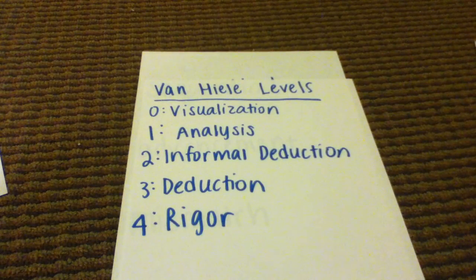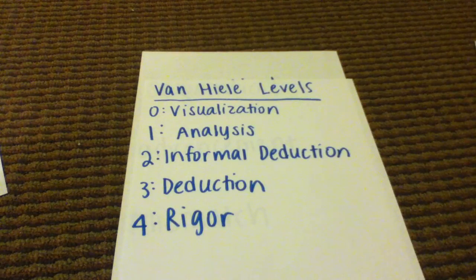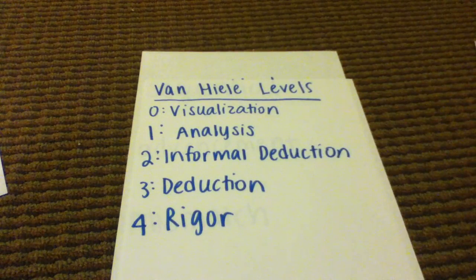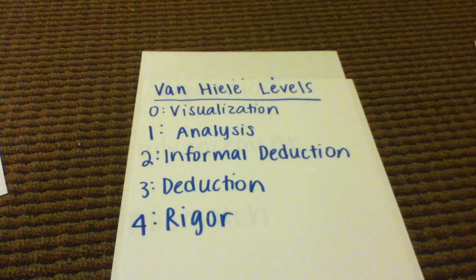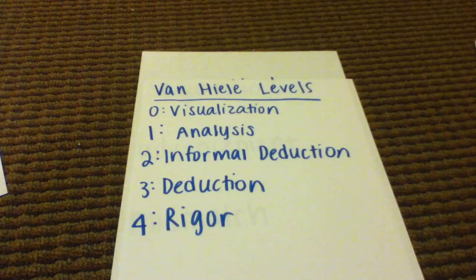Level one is analysis. This is when we move more into looking at characteristics of figures and their properties, but not too in-depth and not necessarily correctly. For example, a student might say 'a square has four equal sides and four equal angles,' or 'a square is not a rectangle because a rectangle has two long sides and two short sides.' That second example is incorrect, but you can see they're beginning to relate shapes in terms of their attributes and properties.